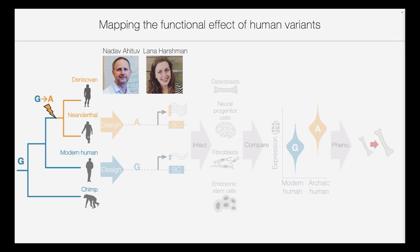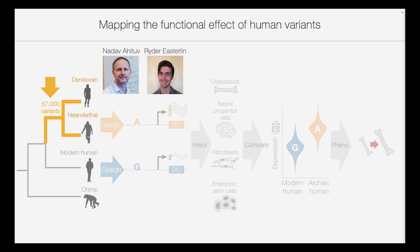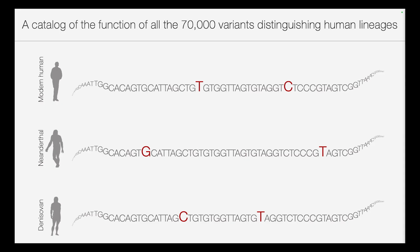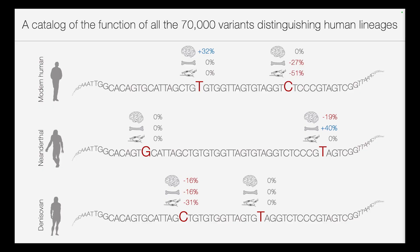Together with our collaborators at the Ahituv lab, we have done this for the 14,000 variants that separate modern humans from other lineages, as well as more recently the 57,000 variants that segregate archaic humans from other lineages. Together, this allowed us to create a catalog of how each of the 70,000 variants that separate human lineages affects expression — for each one, whether it is neutral or functional, in which cell type it affects expression, and to what extent.